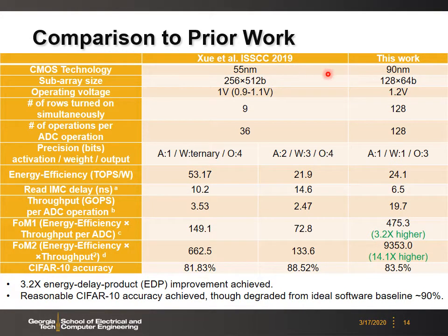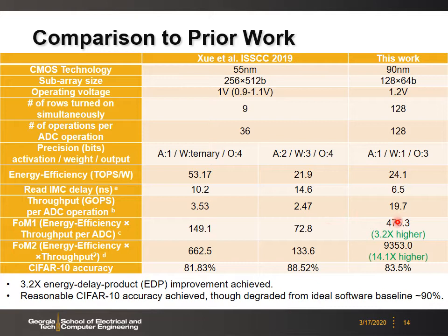Comparing with prior RRAM-based computing-in-memory work from ISSCC 2019: our technology node is older, but we enable all rows simultaneously (128 rows) versus 9 rows in the prior work. We achieve better throughput because of the higher row parallelism. Our energy efficiency is not as competitive due to the older technology node, but considering energy-delay product (EDP) — energy efficiency multiplied by throughput — we achieve 3.2× better EDP compared to the prior design.